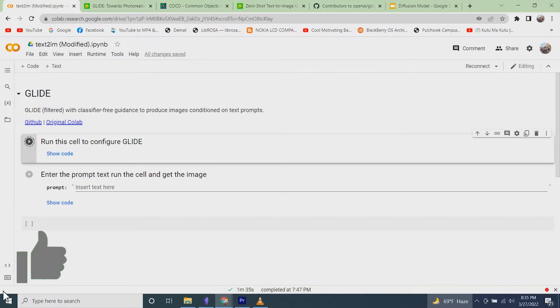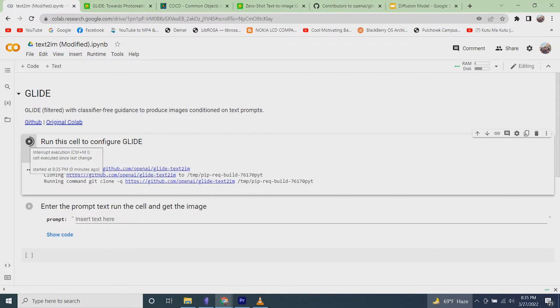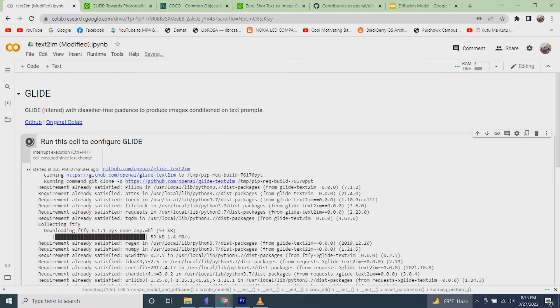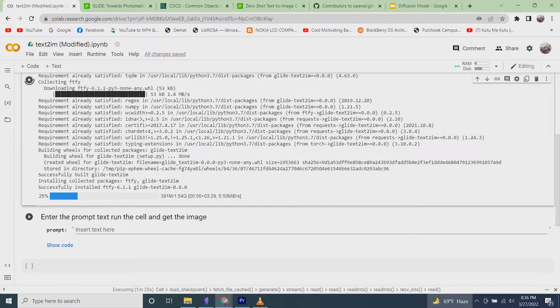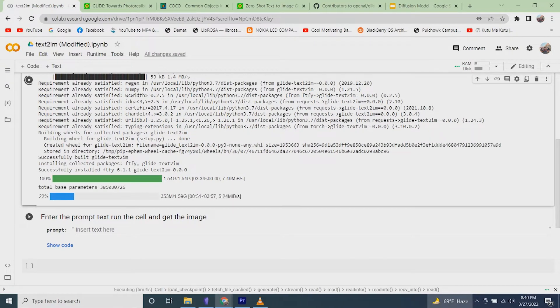Let's get back to the notebook itself. You can grab the link to this Colab notebook in the description, which is simplified for your convenience. Run the first cell to configure GLIDE on Colab. This should get the dependencies, clone the code, and download the pre-trained model.